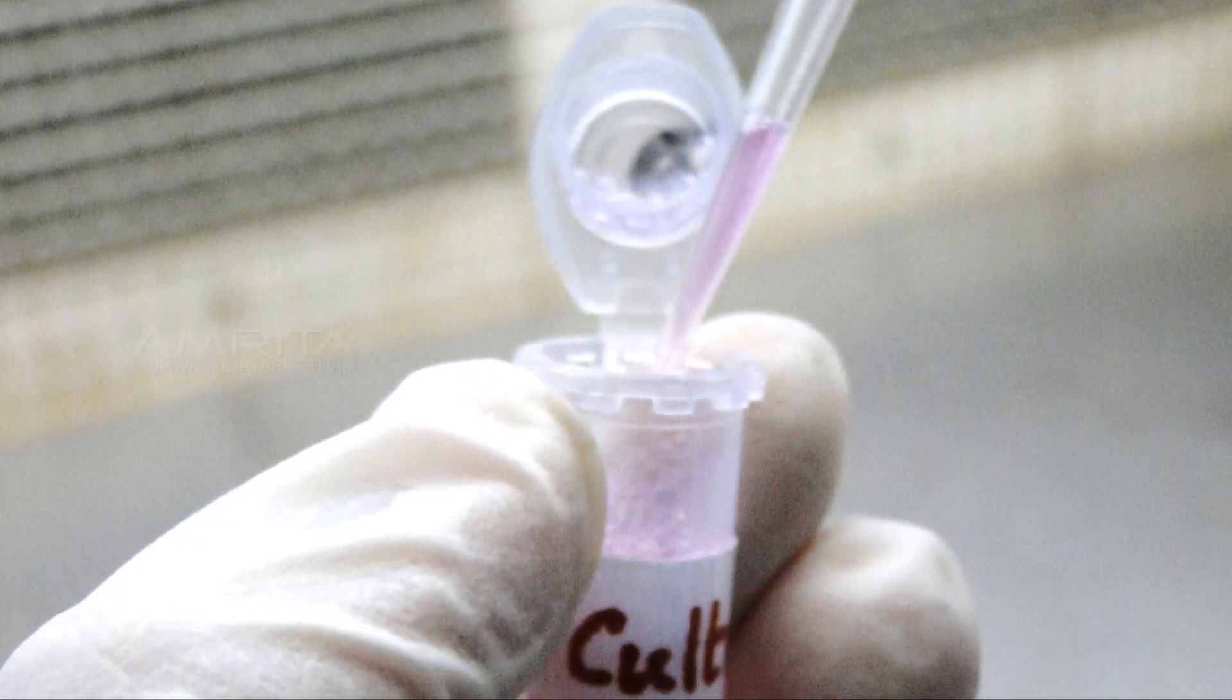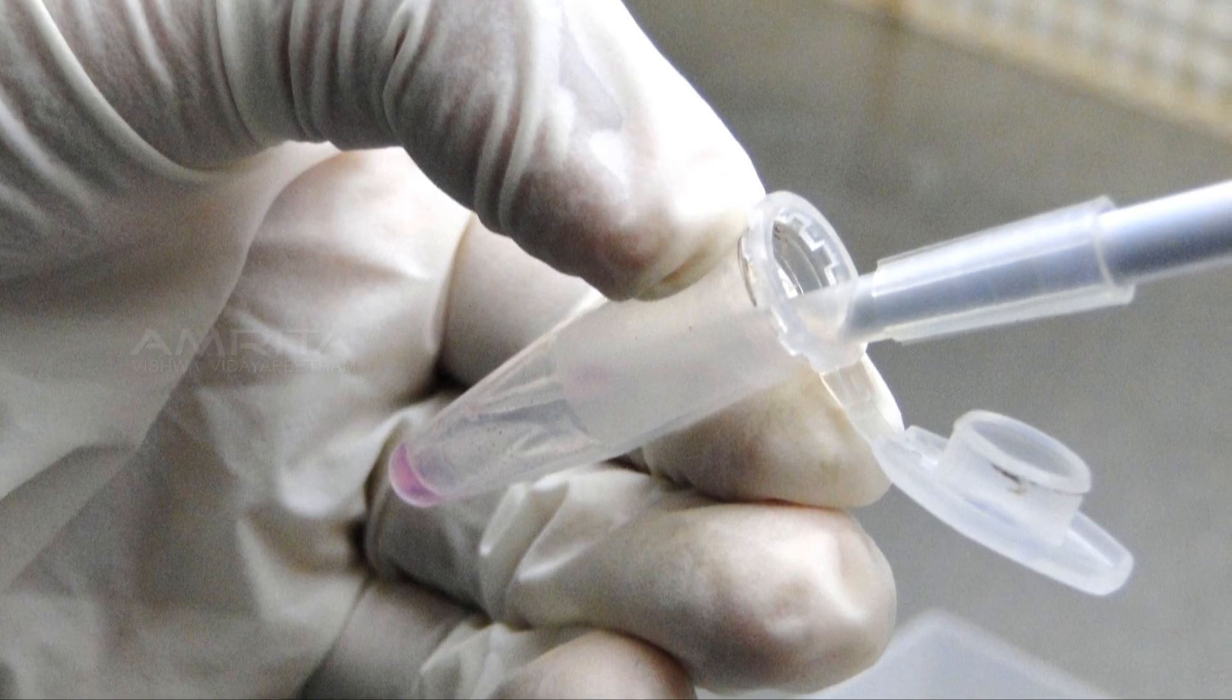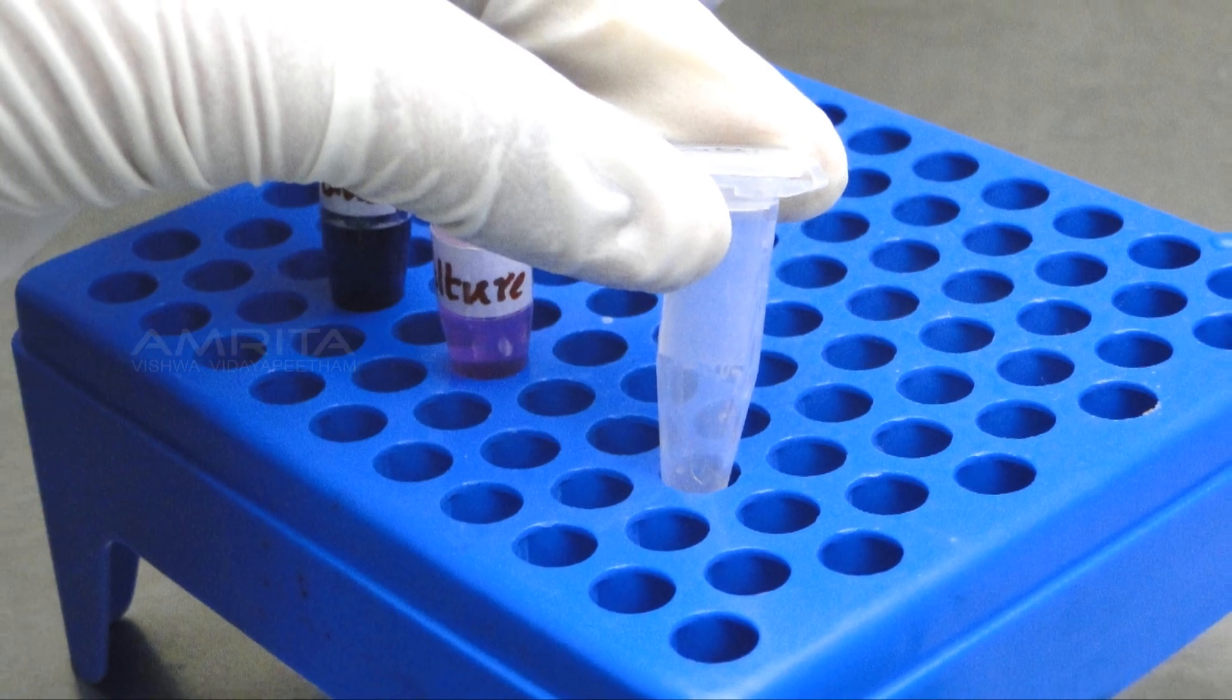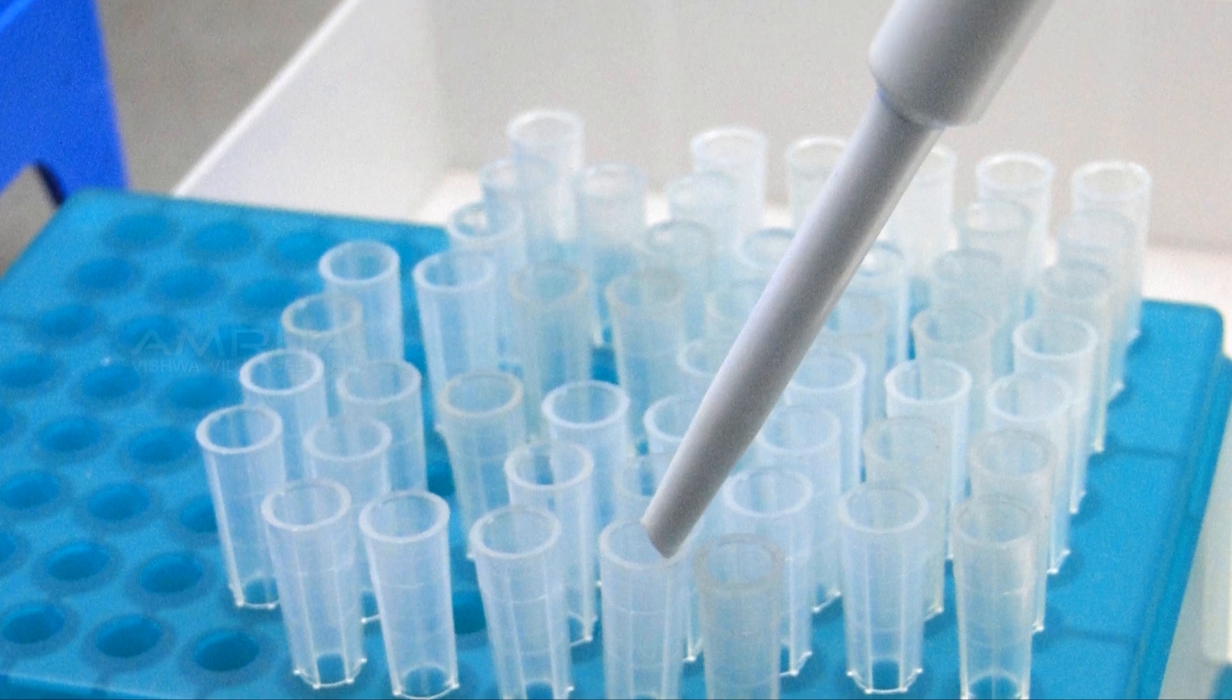Now take 10 microliters of the suspension with the micro pipette and transfer it to a fresh vial. Close the vial and keep it in the vial rack. Dispose the used pipette tip. Insert a new pipette tip to the micro pipette.